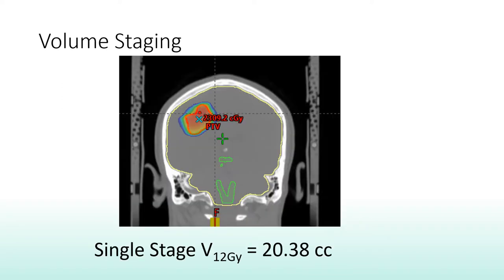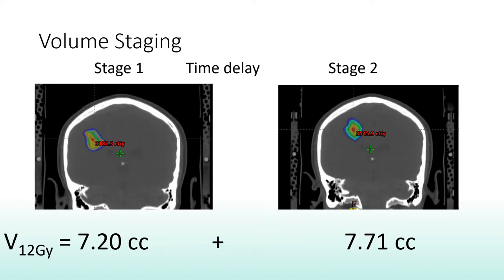Volume staging is a stereotactic radiosurgery strategy used for inoperable AVMs in the brain. The main objective of volume staging is to treat smaller volumes that allow for delivering higher doses to the AVM while meeting the normal brain constraints, mainly the volume that receives 12 Gy or more. So instead of treating the whole volume, stages are treated in separate SRS sessions, resulting in lower normal brain V12 Gy.